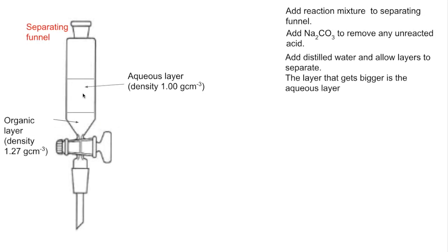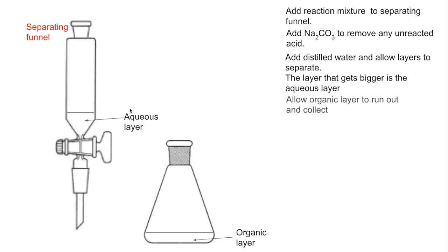Now that we've got the two layers separated, we can run the organic layer out. We'll just open that tap, the aqueous layer stays in the funnel, and we can run the organic layer into a separate collection vessel like a flask.